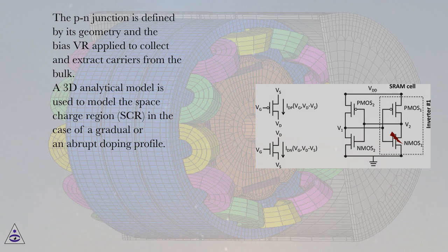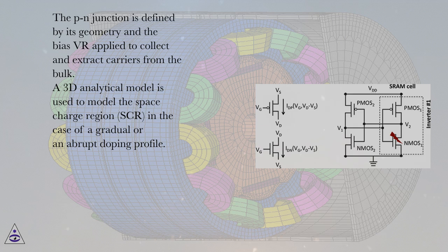A 3D analytical model is used to model the space charge region (SCR), in the case of a gradual or an abrupt doping profile.